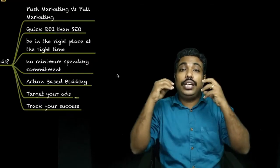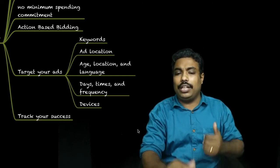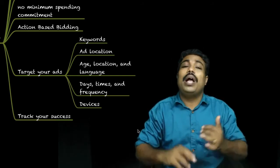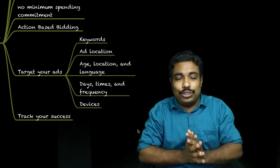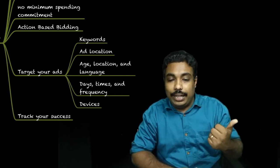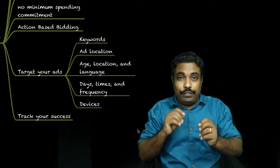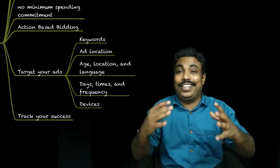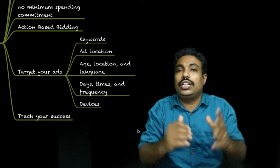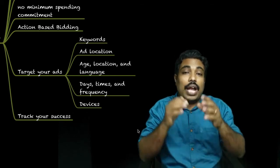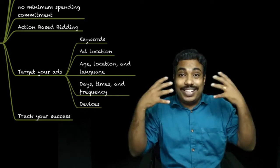Next is targeting your ads. Google Ads provides multiple targeting options: keywords, locations, age, languages, day and time targeting, frequency, and device targeting. You can target specific devices and focus your ads precisely based on all these parameters to reach your ideal audience effectively.